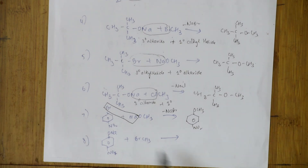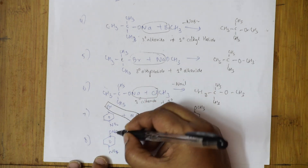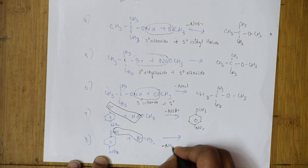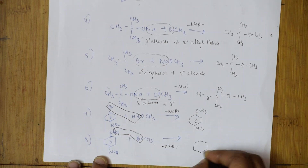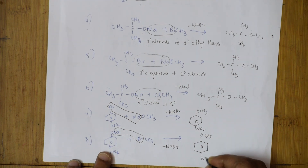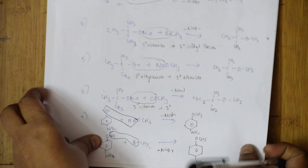Reaction eight: you have ONa and CH₃Br — remove NaBr always, and the product is OCH₃ with the remaining group. For sodium phenoxide (benzene ring with ONa) plus an alkyl chloride: remove NaCl and write C₆H₅-O-C₂H₅ — you are forming an ether with a benzene ring as well.